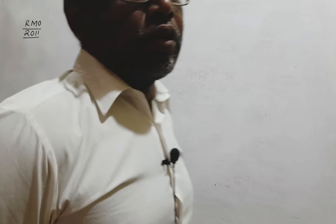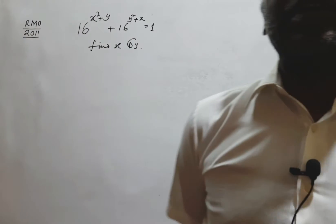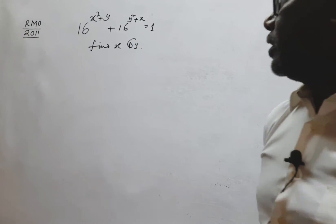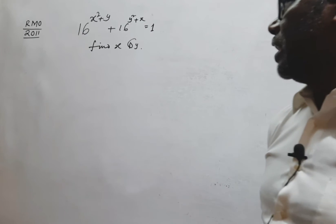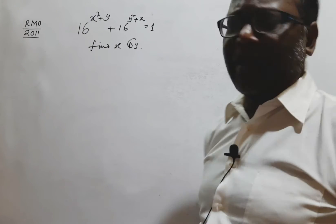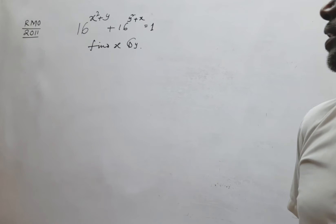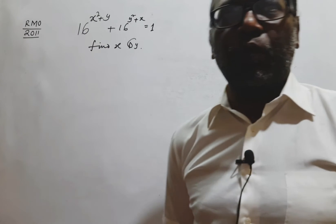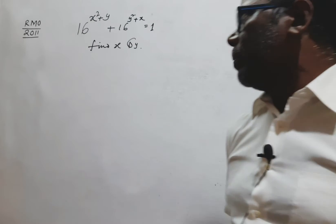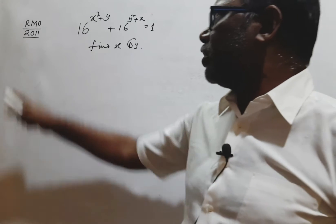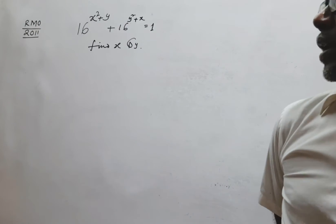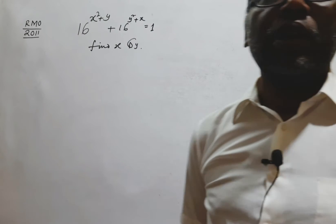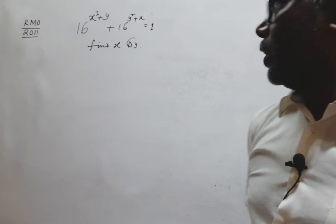Welcome to my channel, dear students and all the viewers. Here is a problem of finding the solution of this equation — a single equation: 16 to the power (x² + y) plus 16 to the power (y² + x) equals 1. We need to find the value of x and y. This problem is from the original Math Olympiad exam, India 2011.